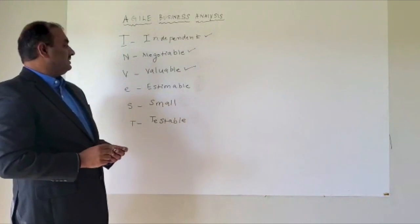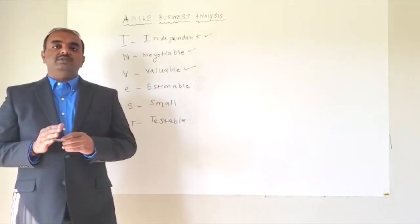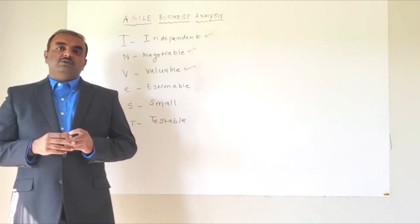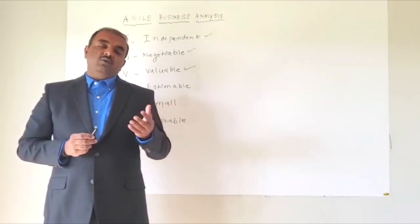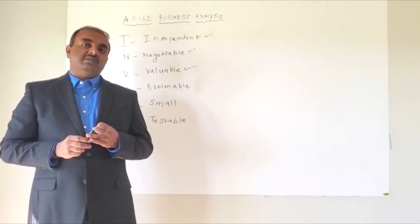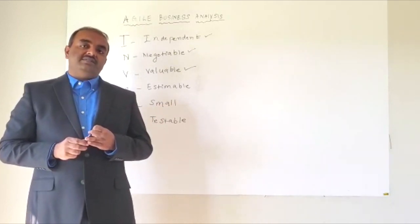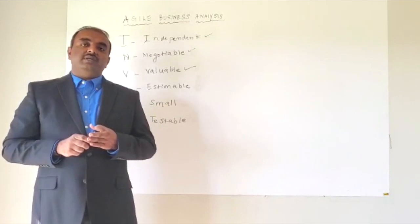The fourth point is Estimable. So we have to make sure that every user story should be estimated accurately. There are various reasons that we cannot estimate the story accurately. One could be the story is very vague. One could be the story does not have all the required details for the developer team to estimate it properly.